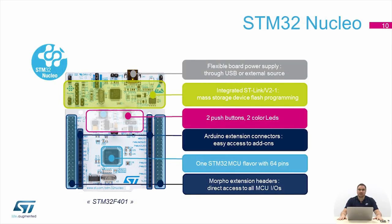I will present the two STM32 platforms used during the hands-on. We have the NUCLEO F401, characterized by a main MCU the STM32 F401. Onboard we also have an ST-Link that can be used as a mass storage device and to flash the main MCU. We have two push buttons: a reset button and a user button. We have two color LEDs and an Arduino standard connector that can be used to extend the functionality of the main MCU, for example by adding expansion boards with sensor or connectivity capabilities.